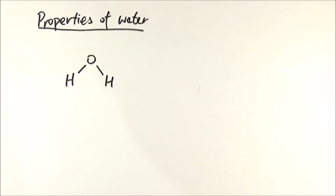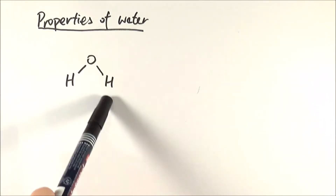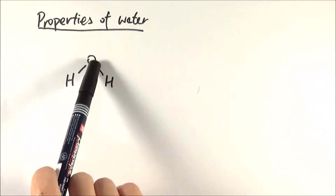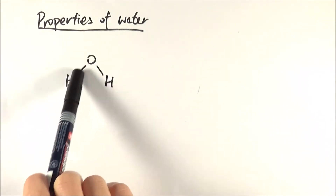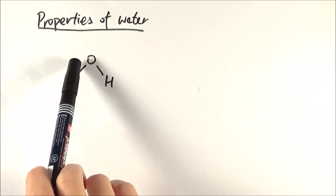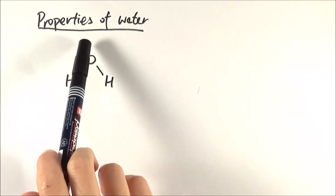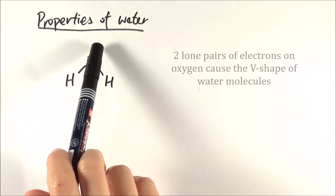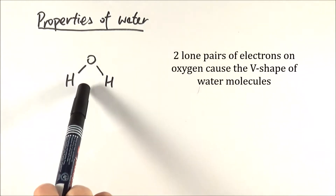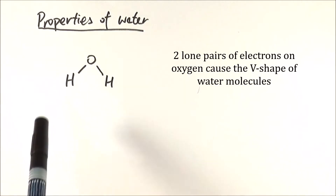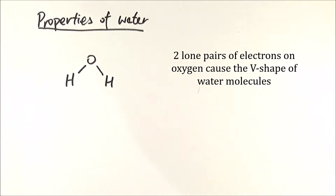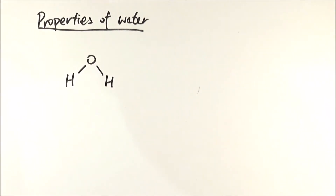First of all we'll look at the properties. Water is presented in a V shape, and that is because each of these bonds represents a pair of shared electrons, but there are also two lone pairs of electrons on the other side of oxygen. Those lone pairs repel one another, which is why water is in a V shape.